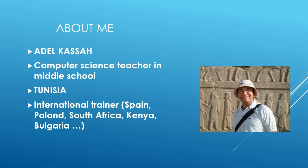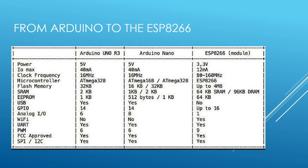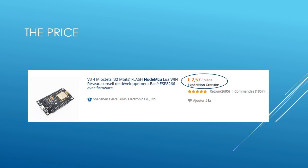A lot of makers start with our beloved board the Arduino Uno, but at a certain point you need to switch, and the ESP8266 seems to be the logical path. The first reason we all choose the ESP8266 family is the integrated Wi-Fi module. The second reason is the price — the board is one of the cheapest on the market.